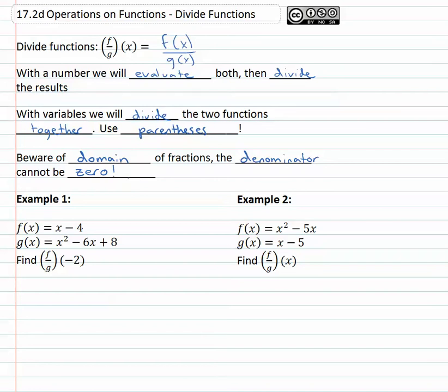So let's see what we have for this first example. We have f of x is x minus 4, g of x is x squared minus 6x plus 8. We're asked to find f over g of negative 2, which really means find f of negative 2 and divide by whatever g of negative 2 is.